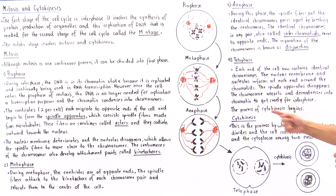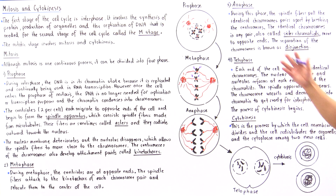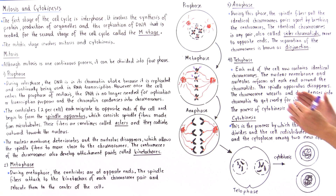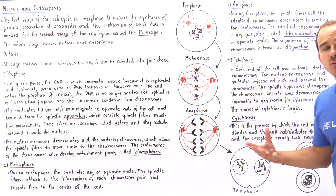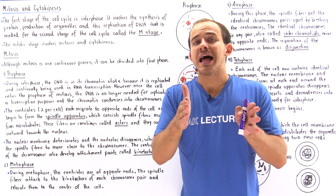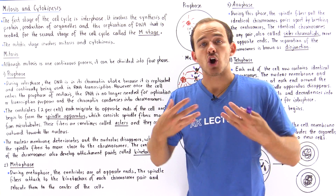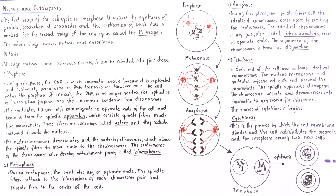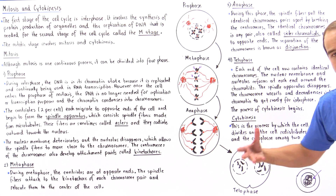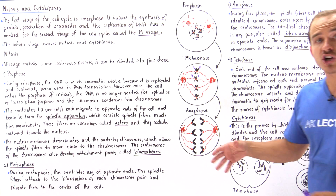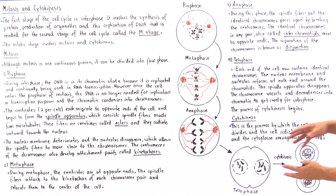Cytokinesis actually begins during telophase and then continues after telophase ends. Cytokinesis is the division of the cytoplasm — the process by which the cell membrane divides, the cytoplasm separates, and the organelles are distributed equally among two cells. The result is two identical daughter cells that are the same size and contain the same exact genetic information, with chromosomes decondensed into chromatin form.